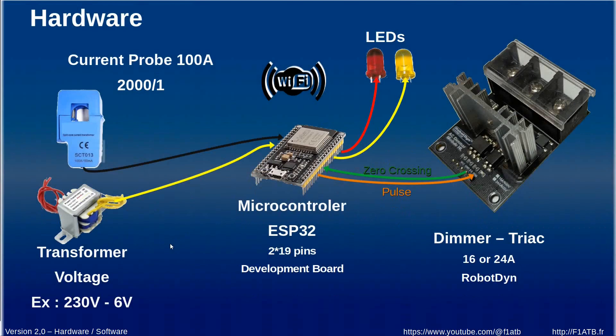Now a display of the hardware we need in our system, you can see it's quite simple. We have first here a current probe we will put around the phase cable at the input of the house